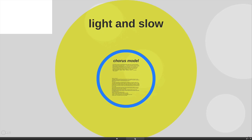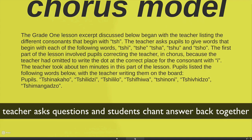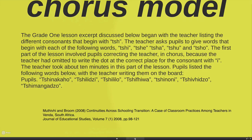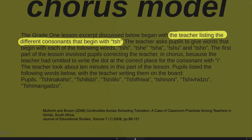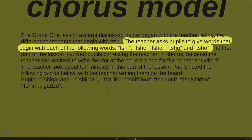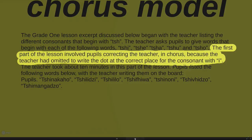Light and slow is probably the lowest demand zone we're working with. I'd like to discuss a model in South Africa known as the Chorus model and use an example from one of the classrooms. This is a Grade 1 lesson — an excerpt which began with the teacher listing the different consonants, then asking pupils to give words that began with each consonant. The first part of the lesson involved pupils correcting the teacher in chorus, because the teacher had omitted a dot at the correct place for a consonant.